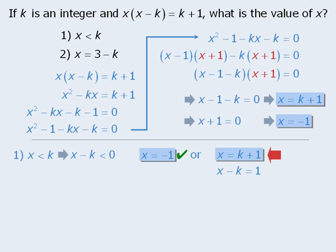So statement 1 tells us that x minus k is less than zero, but this possible solution here tells us that x minus k equals 1. Well, if statement 1 is true, which it is, then x minus k cannot equal 1, in which case this one solution is not possible.